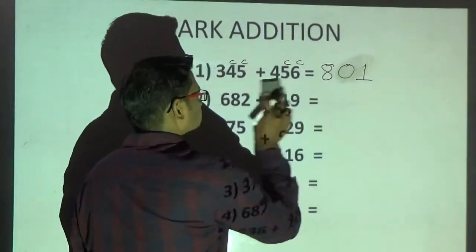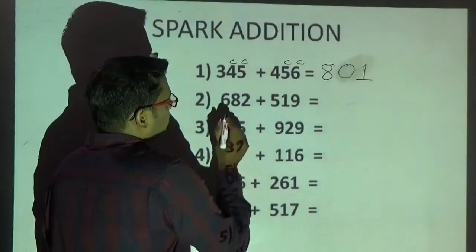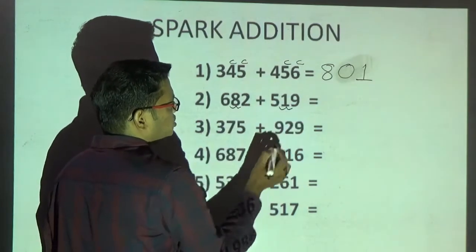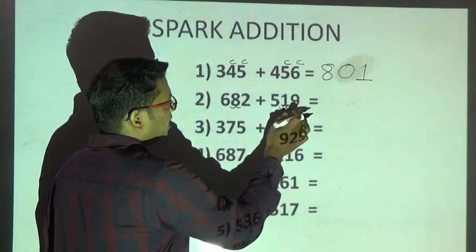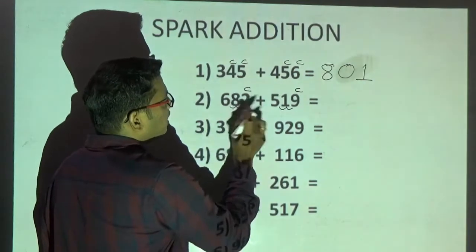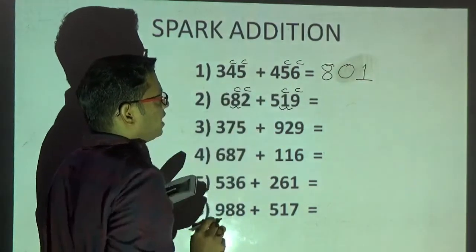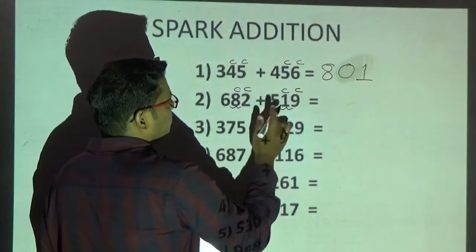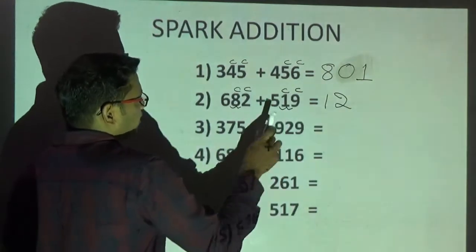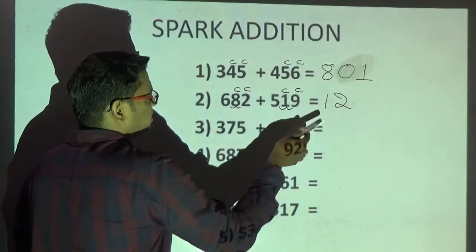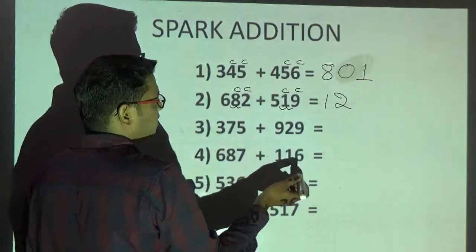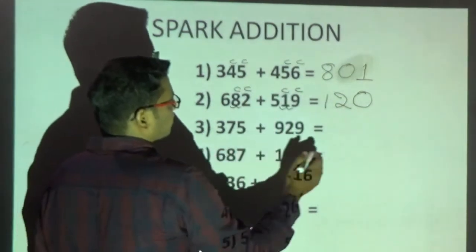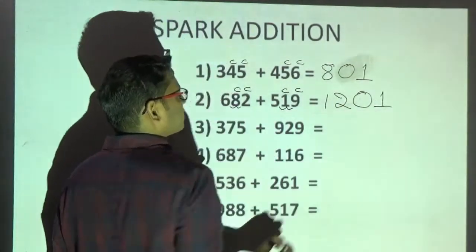Explaining again slowly: 6 plus 5 is 11. Observe next two digits — 9. Whenever you get 9, be very cautious and observe the next digits. 9 plus 2 generates carry, therefore 8 plus 1 with that carry will also generate carry. 6 plus 5 is 11 — since next two digits generate carry, 11 becomes 12. 8 plus 1 is 9 — since next digit generates carry, 9 becomes 10, write only end digit 0. Then 9 plus 2 is 11, write end digit. Answer is 1201.